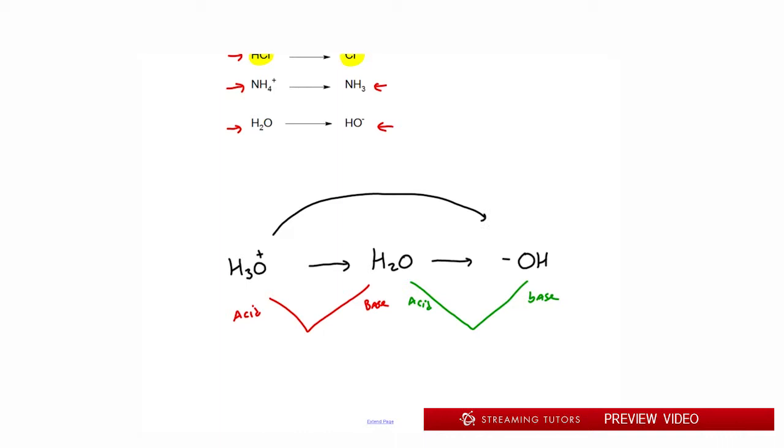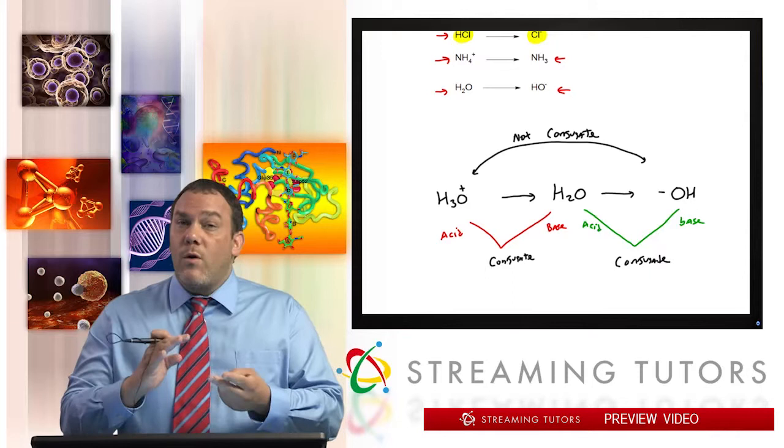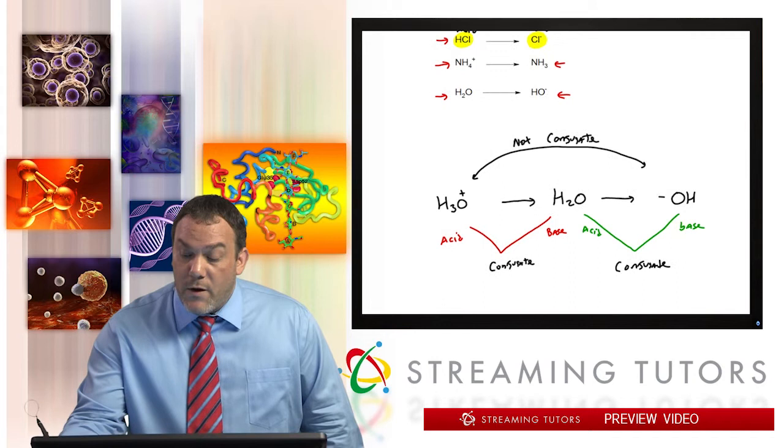However, please note that these two over here are not conjugates, because they're more than one H difference between them. So H3O+ and OH- are not conjugates of each other. H3O+ and water are, or water and hydroxide is, but not H3O+ and hydroxide. So this is a conjugate relationship, and this is a conjugate relationship. And so recognize that conjugates are always one more or one less H. That's what you have to keep in mind.